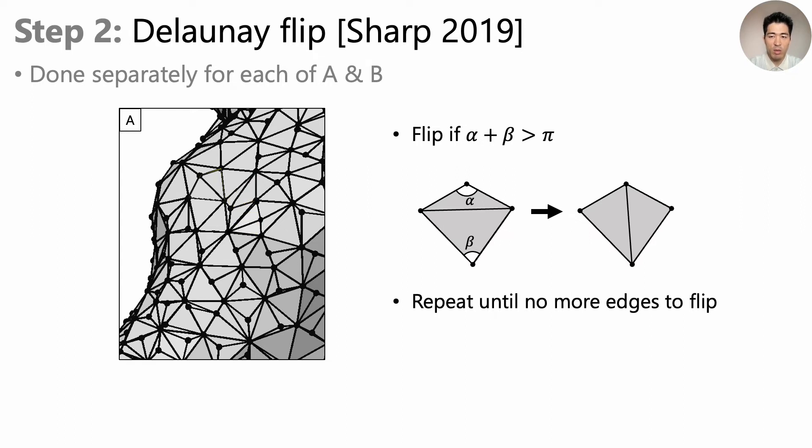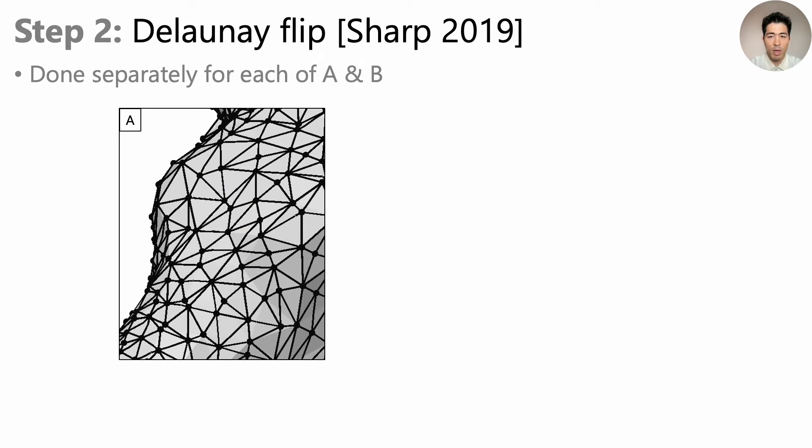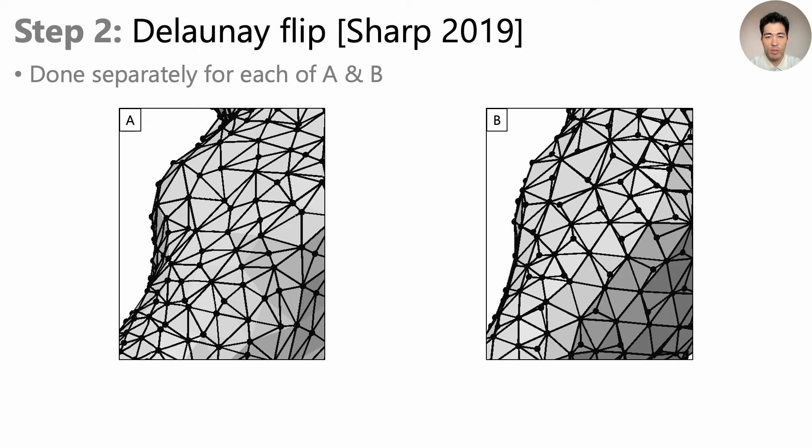We repeat this until there are no more edges to flip. This process is known to converge in finite steps. And we end up with something like this.